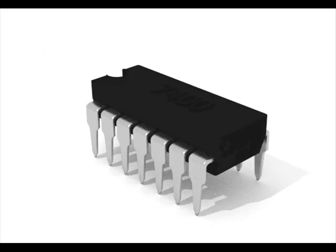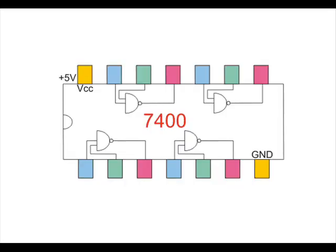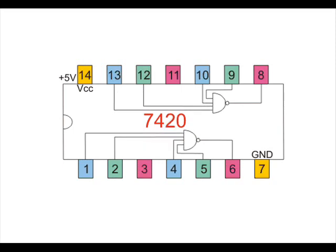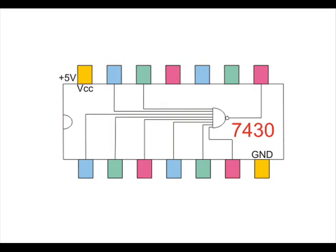There are many NAND gate ICs available in the market. IC7400 is a NAND gate IC where 4 two-input NAND gates are available. IC7420 contains 2 four-input NAND gates. IC7430 contains 1 eight-input NAND gate. IC7440 is also a NAND gate IC.